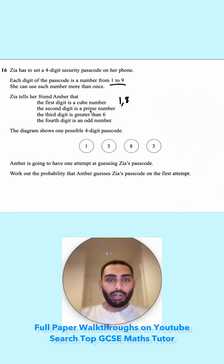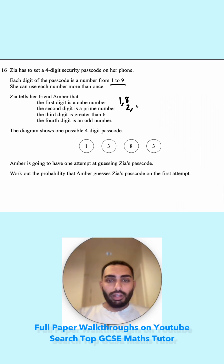The second digit is a prime number, so our prime numbers are numbers with two unique factors. The first one is 2, and then we have 3, 5, 7. 9 is a prime number.